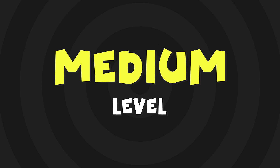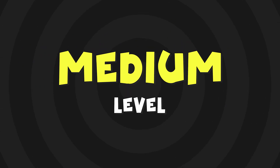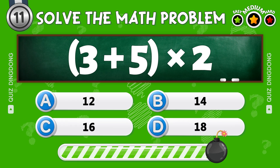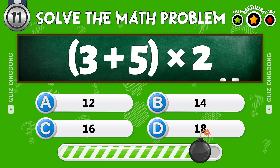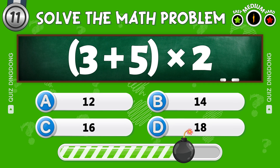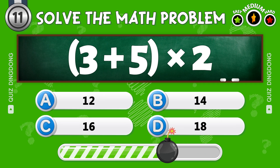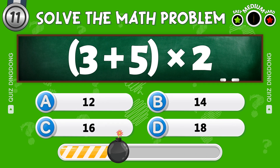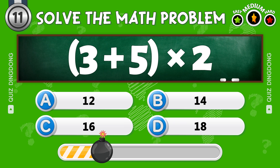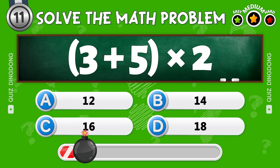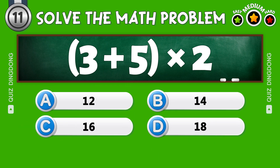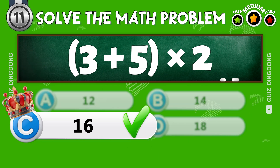Now let's move on to the medium level. Solve this problem. What's 3 plus 5 times 2? Correct! The answer is 16.